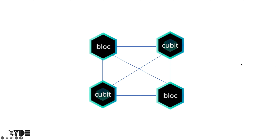Counter qubit and counter block handle only a single state called counter state. However, most apps handle different kinds of states. There is nothing particularly complicated when there are more types of states to be handled. But what if one state is dependent on another? In other words, what if a qubit or block needs to communicate with another qubit or block?